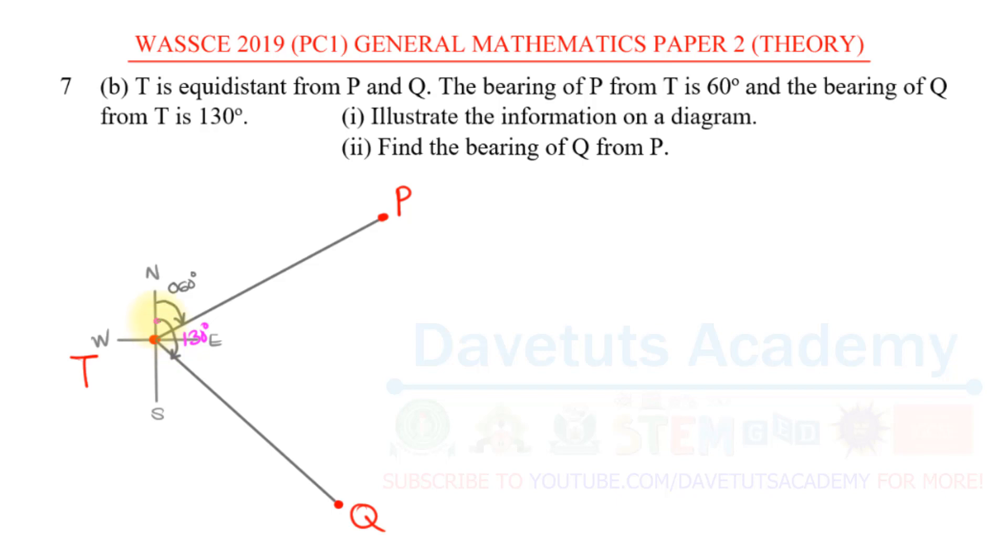From the north down to the bearing of Q from P, that is what is wanted. So this is the diagram they say we should illustrate, and that is as good as done. We are now to find the bearing of Q from P, meaning that we go to Q and find its bearing from P.